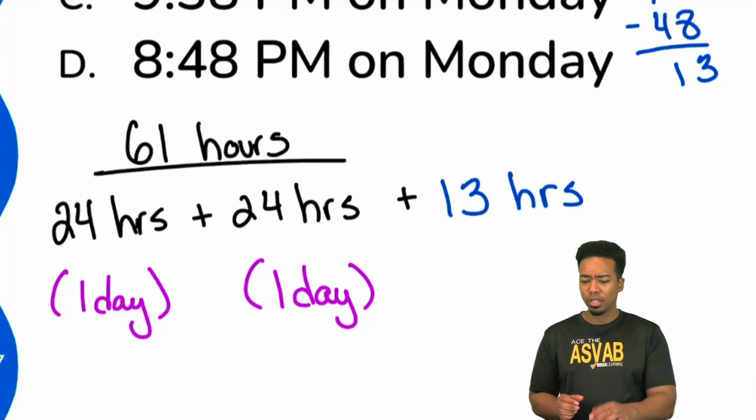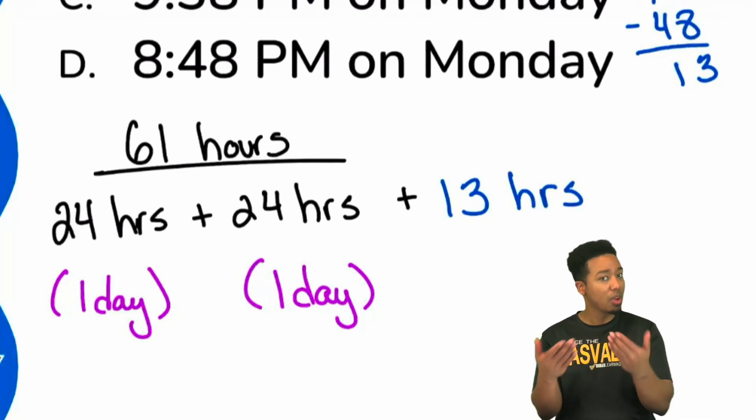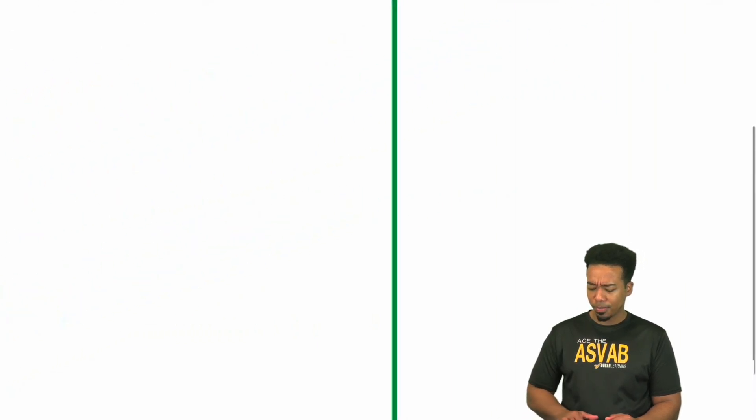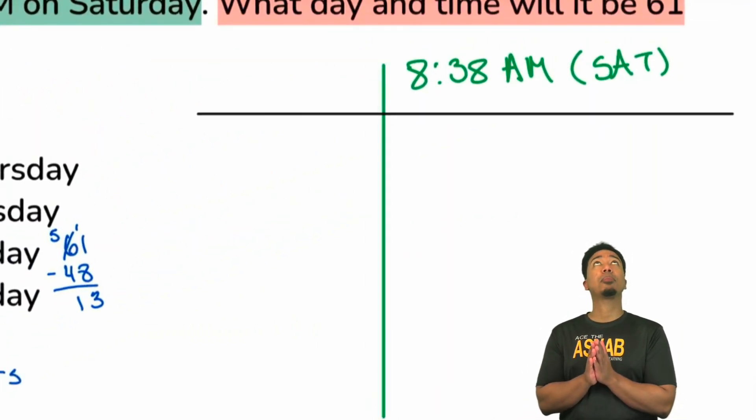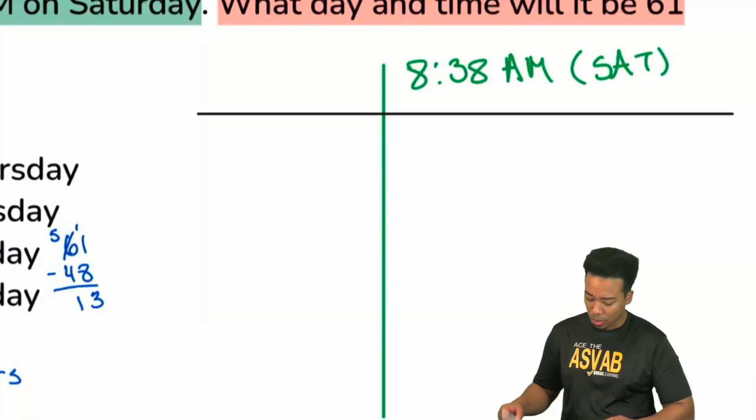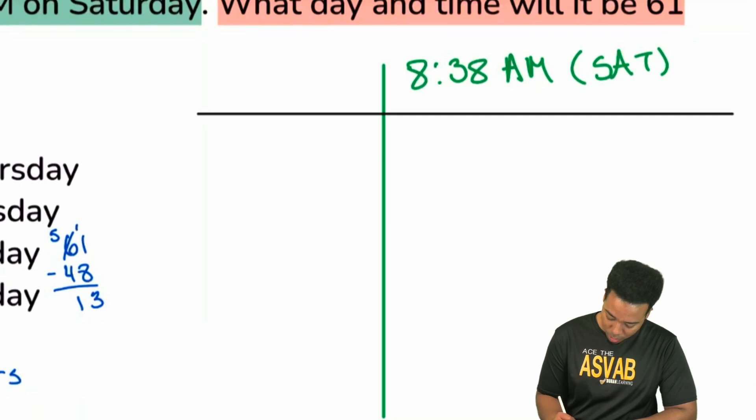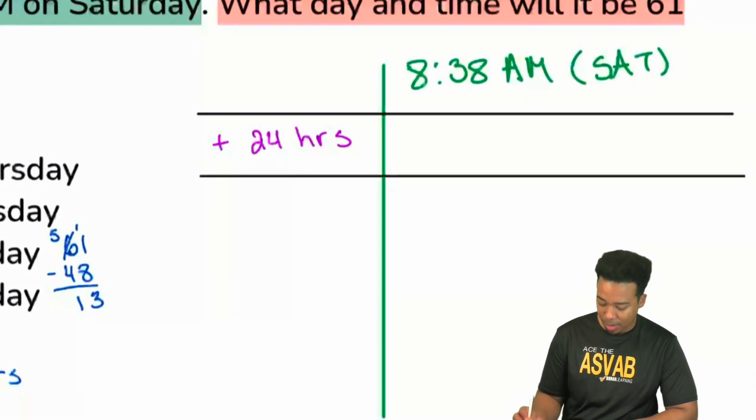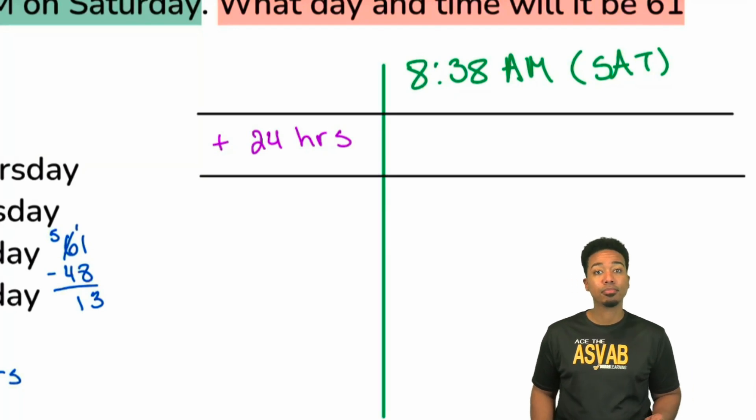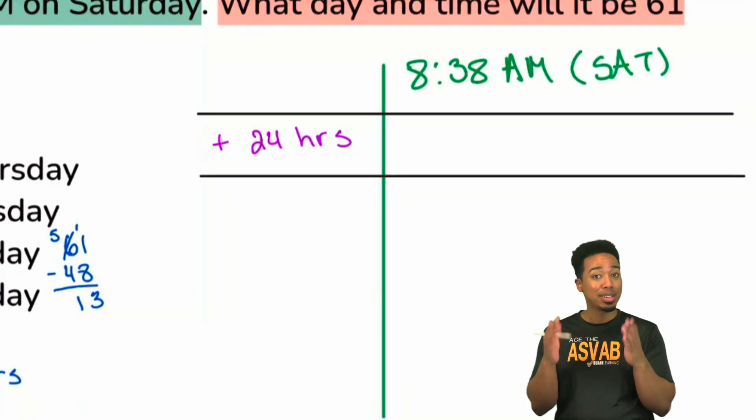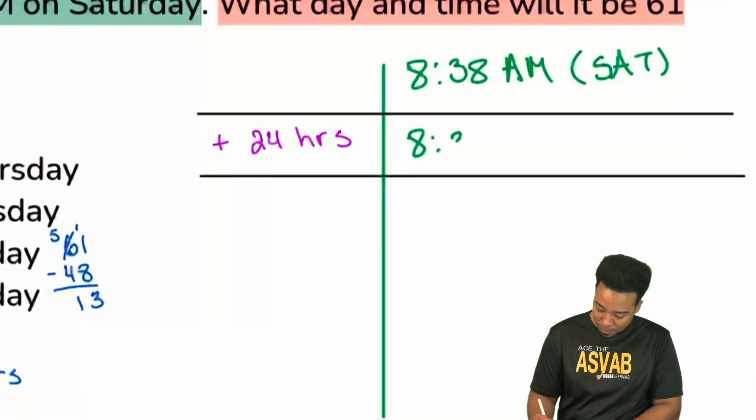Let's see if this plan is sensible in practice. Let's bring it over here to our makeshift table, and we see that at the top we have 8:38 AM on the Saturday. If we add the first set of 24 hours, what day and time do we have 24 hours later? It's going to be Sunday, what time? 8:38 AM exactly. We don't have to worry about the time because 24 hours is just the very next day, the same exact time.